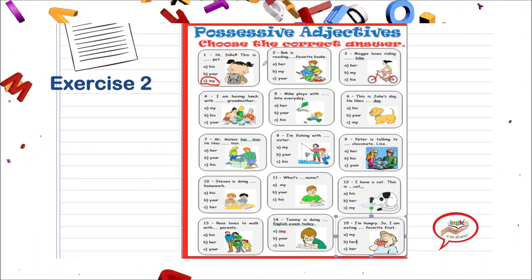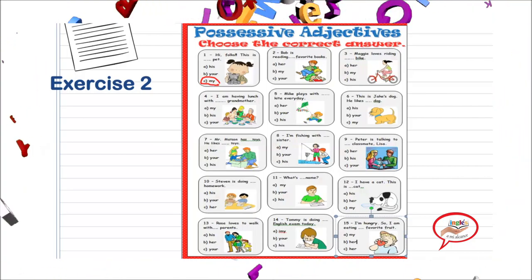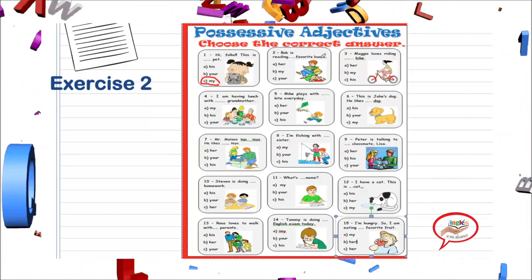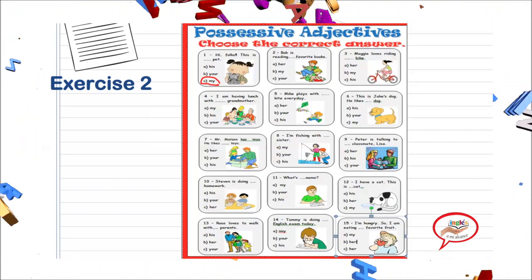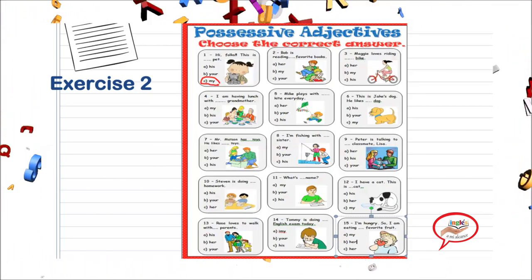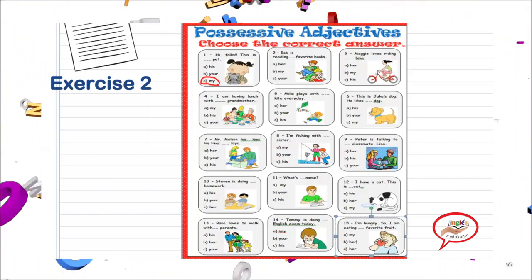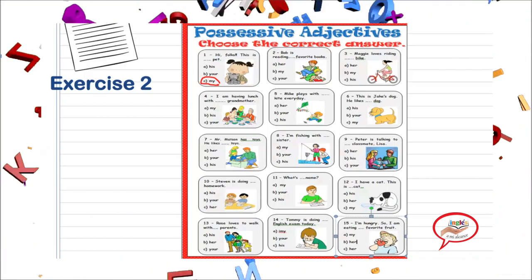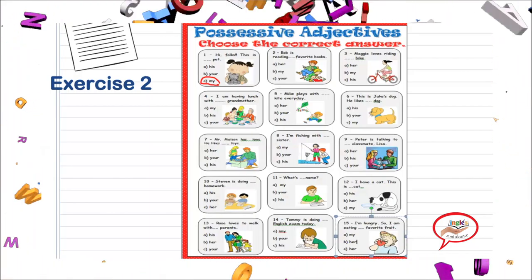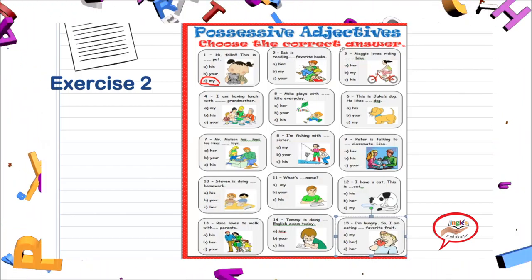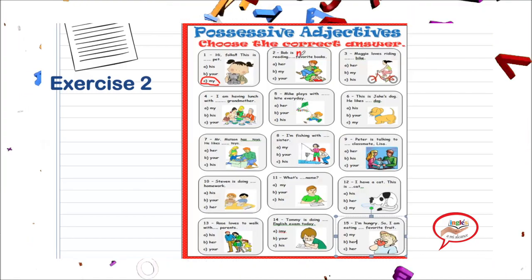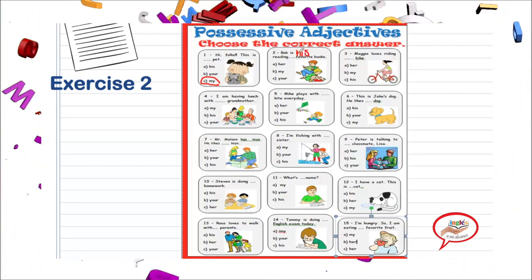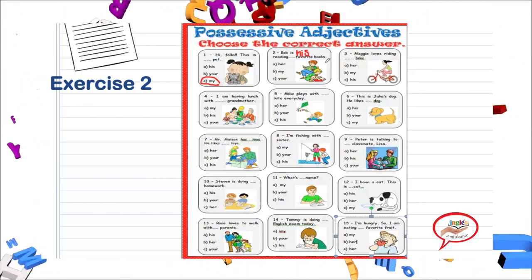Let's see question number two. Bob is reading his favorite books. En este caso, estamos hablando de Bob, y Bob es un hombre, ¿verdad? Entonces ¿qué utilizamos para un niño? He. ¿Y cuál es ese pronoun para he? Es his. Muy bien. Bob is reading his favorite books. Very good.